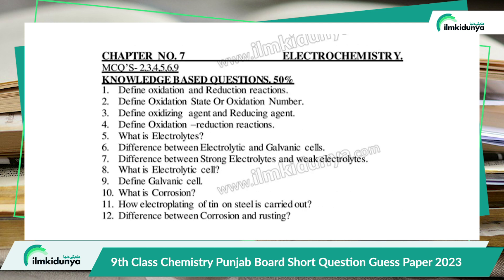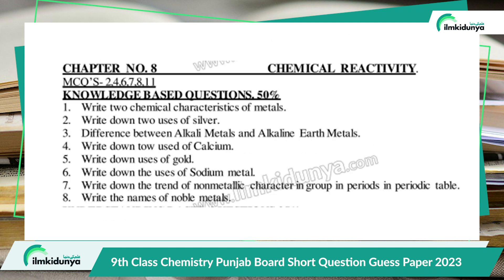Chapter 7 is Electrochemistry. The important short questions are: Define oxidation and reduction reactions. Define oxidation state or oxidation number. Define oxidizing agent and reducing agent. What is an electrolyte? Difference between electrolytic and galvanic cell. Difference between strong electrolyte and weak electrolyte. What is an electrolytic cell? Define galvanic cell. How is electroplating of tin on steel carried out? Difference between corrosion and rusting.